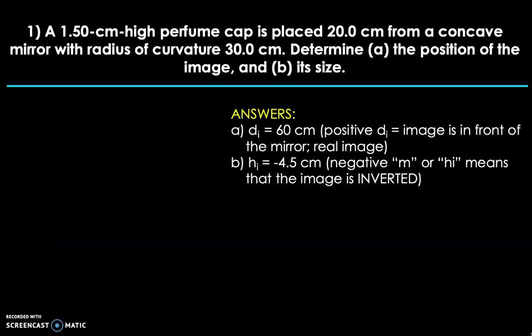Now at this point, I'd like us to make sense of those numbers. So first is, for part a, we got d sub i equals 60 centimeter. Now take note of this. If d sub i is positive, it means that the image is formed in front of the mirror and therefore, it's a real image. So that's how you will physically interpret this answer. And for b, image height is negative 4.5 centimeter. Now for image height, in the summary of sign conventions, if you remember, if it's negative, it simply means that the image is inverted.